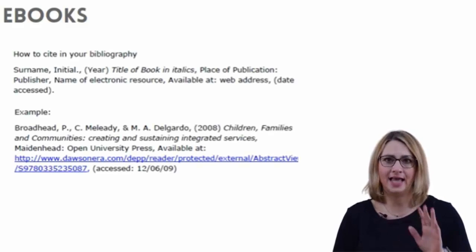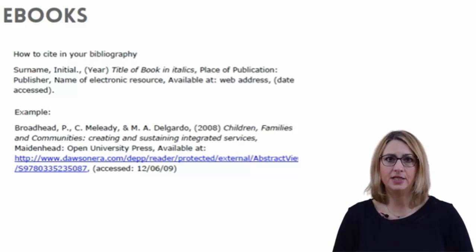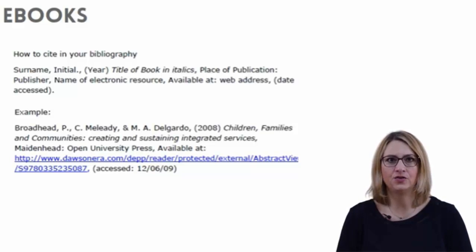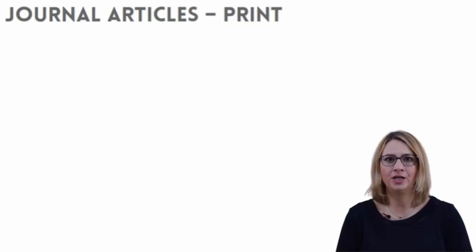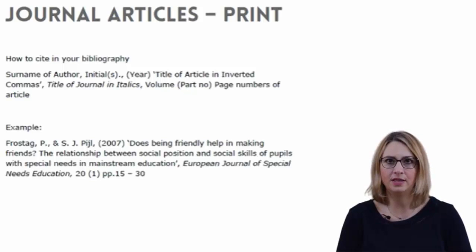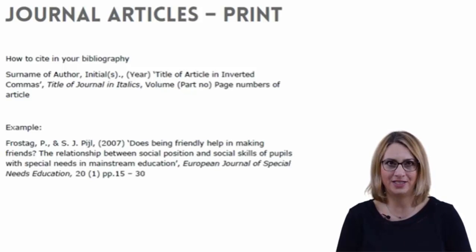E-books should be cited as any other book would be cited, so follow the rules in the books or chapter in edited books section. Include at the end of the entry the details of the resource you have accessed this from and the date accessed. In printed journal articles, use the surname of the author followed by initial, the year of publication in parenthesis, the title of article in inverted commas, the title of journal in italics, the volume and part number in parenthesis, and finally the page numbers of the article.